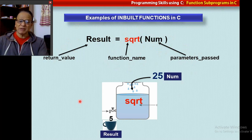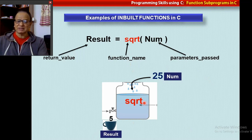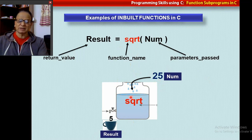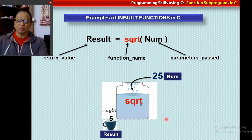This is an imagery of a function you are going to write. This is like a pot here. It has the name SQRT. You feed in 25, you open the tap, you get 5. So there is some code inside this pot which converts 25 into 5. We are going to name the function, write the code for this function, convert the parameter into the result you want, and return the return value. Please remember this imagery all through these two sessions.